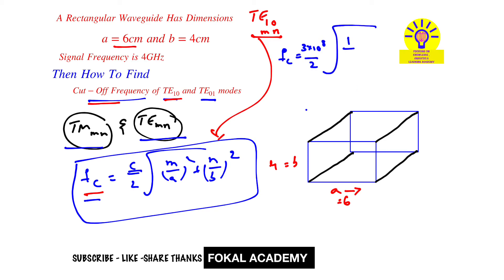m is 1, so (1/6)² plus (0/4)². By simplifying this, we get fc = 2.5 gigahertz. This is the cutoff frequency for TE10 mode for the given rectangular waveguide.